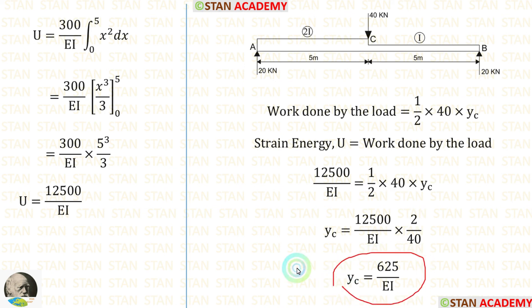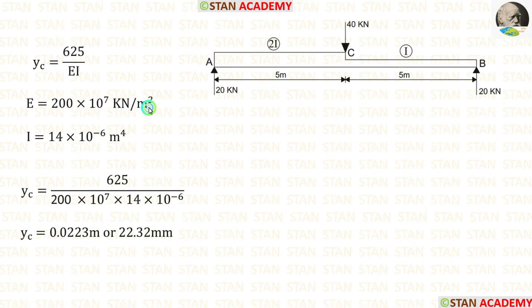Finally, we are getting yc is equal to 625 by EI. In the question, the values of Young's modulus and moment of inertia are given. We can apply the values. After the calculations, we are getting yc is equal to 0.0223 meter. Otherwise, we can multiply this value by 1000. We will get in millimeter.